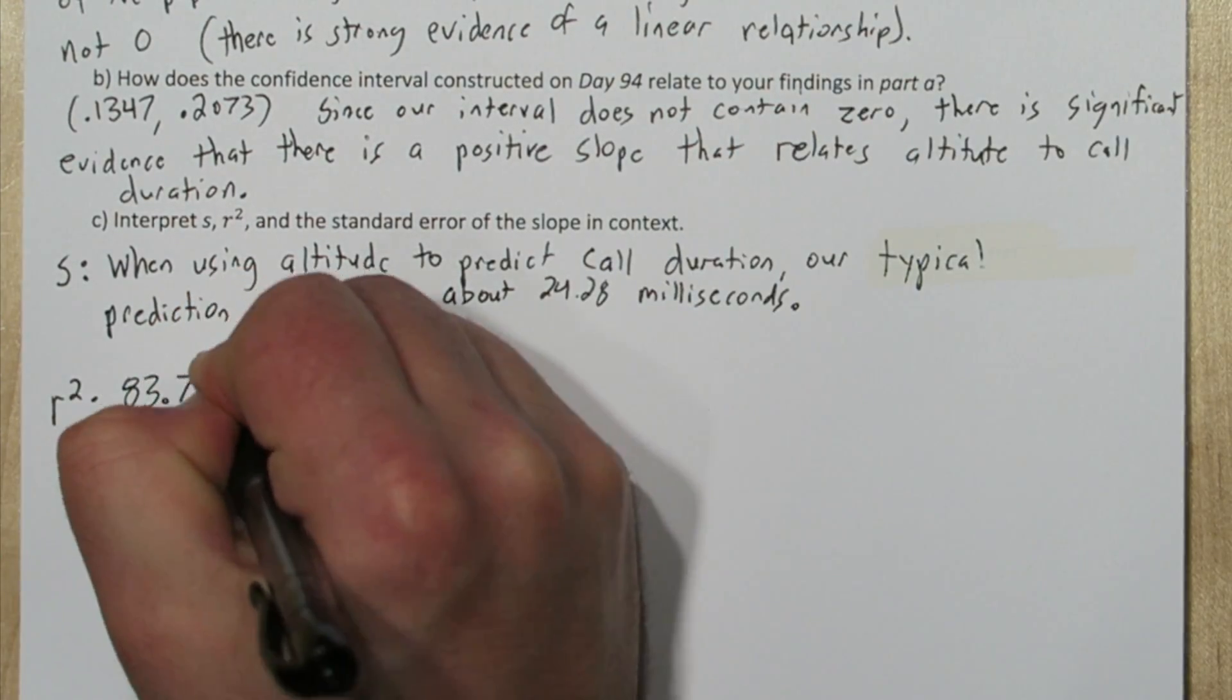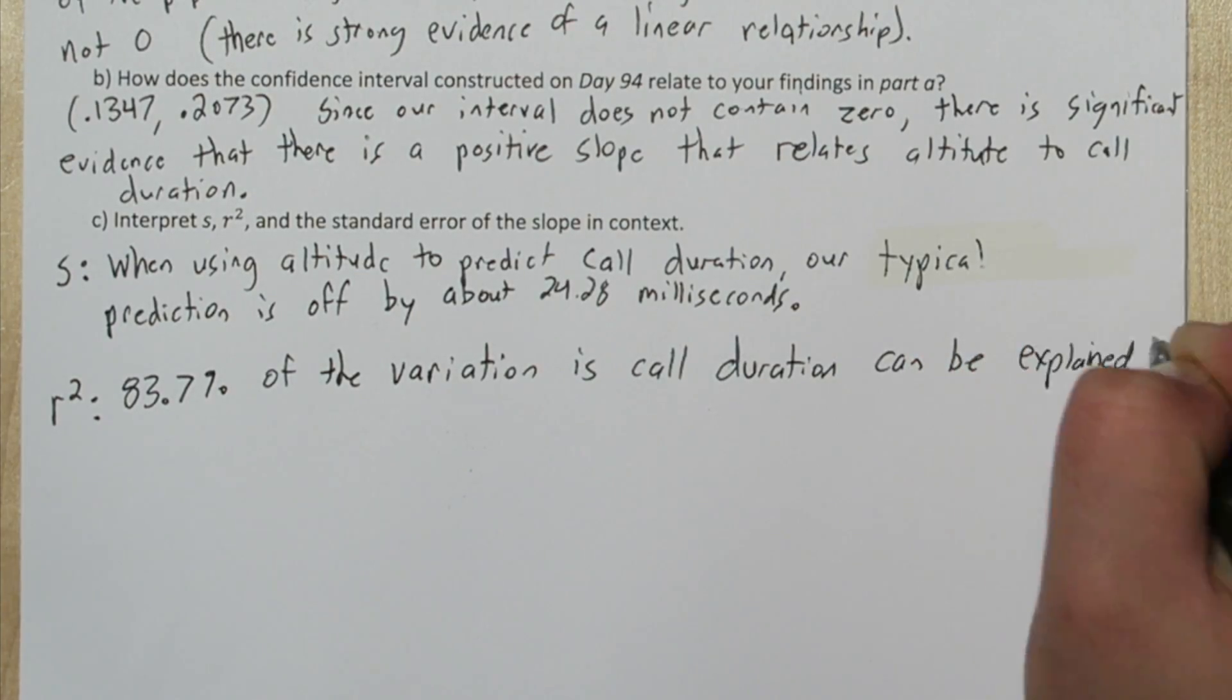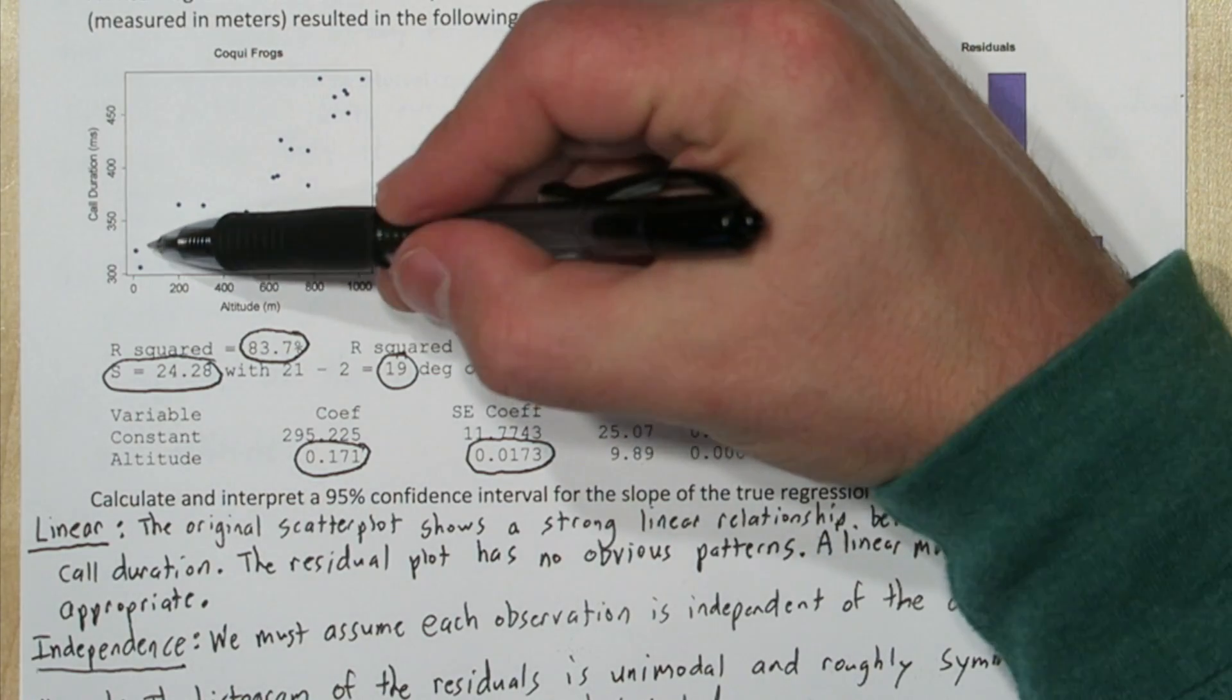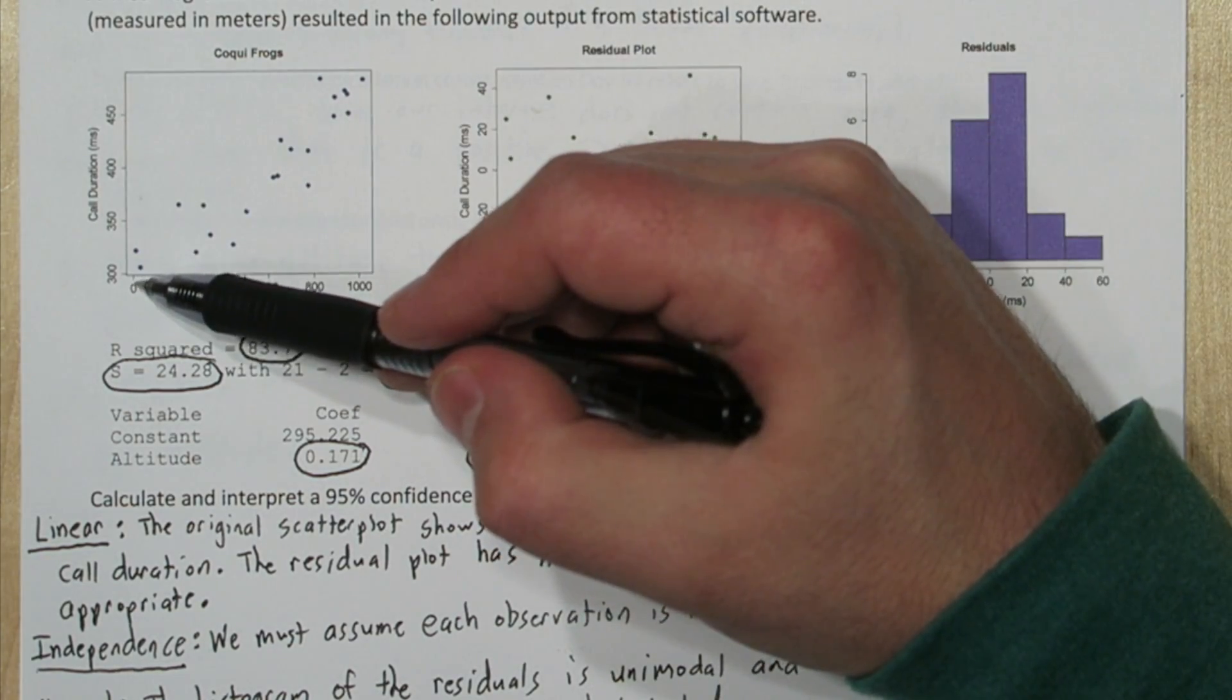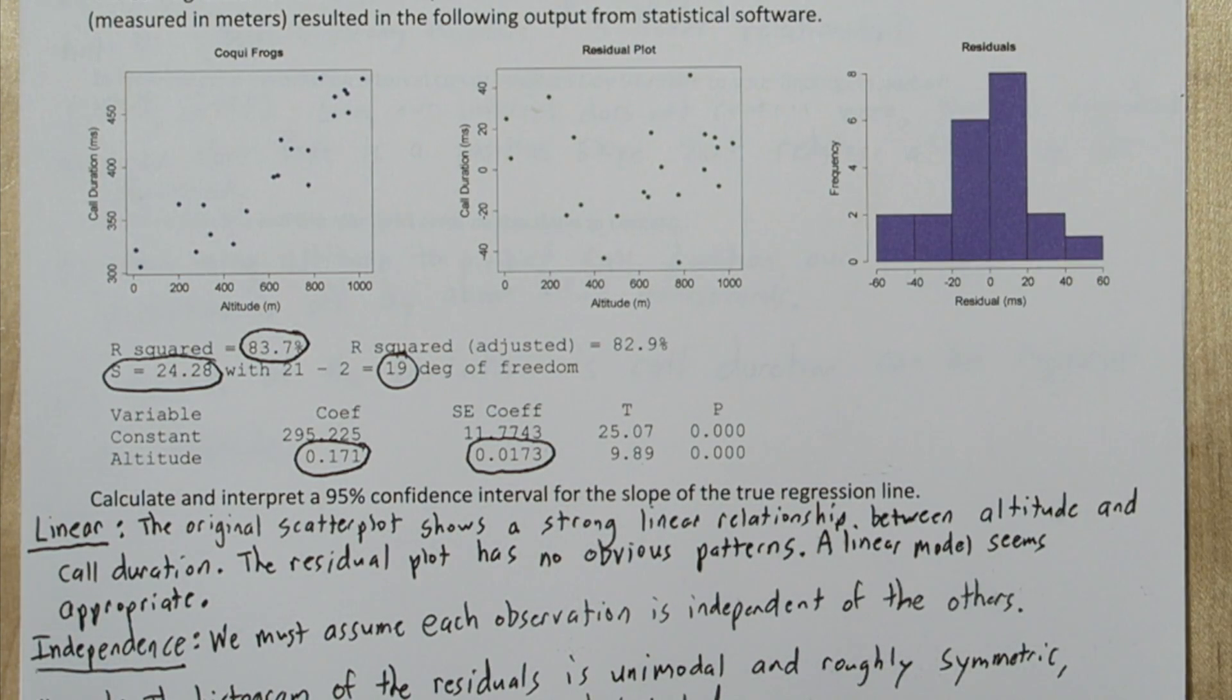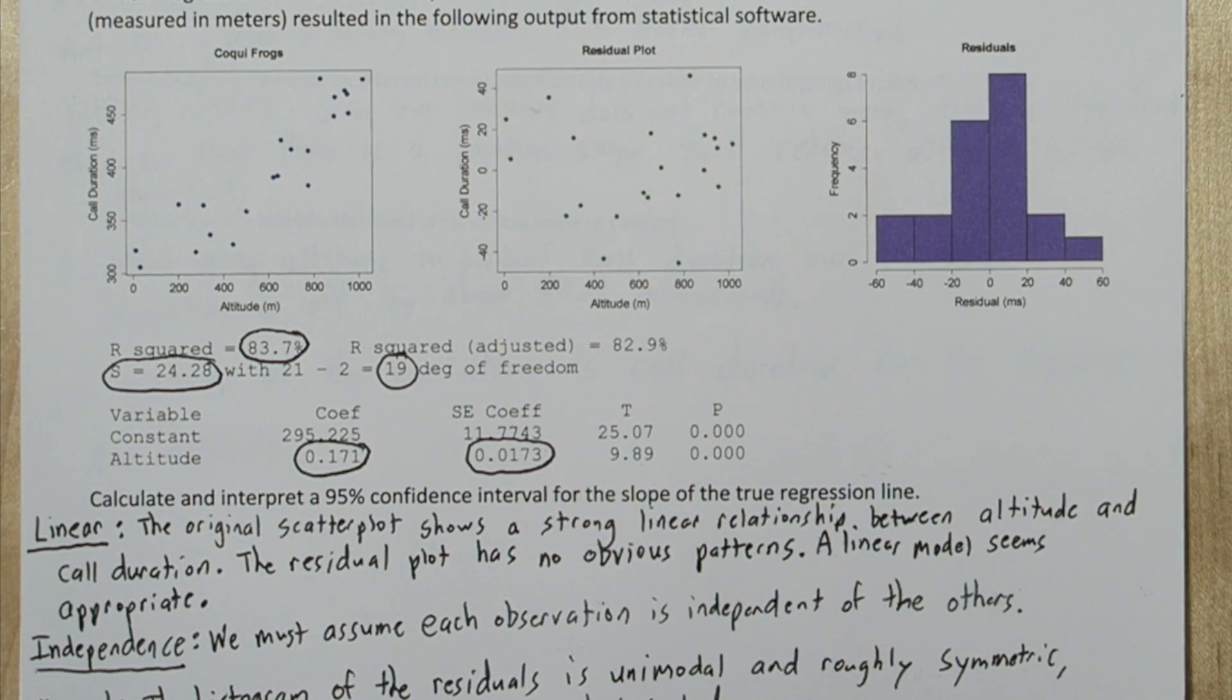For r-squared, 83.7% of the variation in call duration can be explained by altitude. If we look at the original scatter plot, the call durations vary. It looks like in this sample they vary from about 300 to almost 500. Now how much of that variation can be explained by the altitude? That's what r-squared tells us.